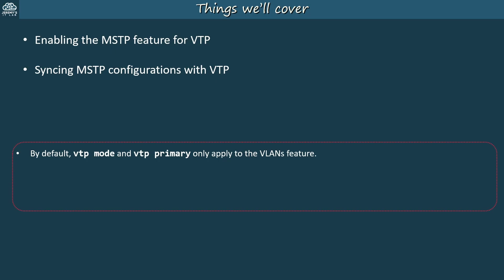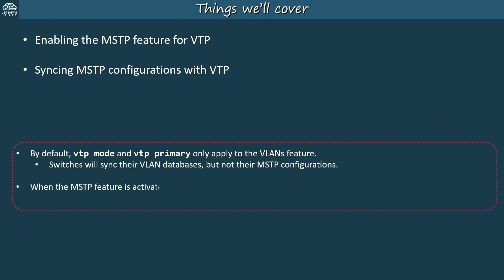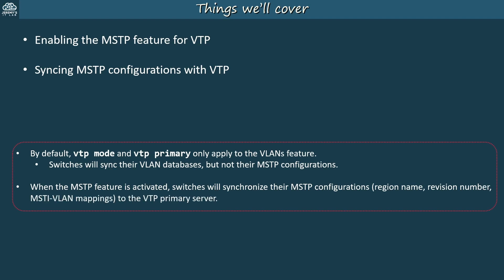By default, when you configure VTP it only enables the VLAN feature, so switches will sync their VLAN databases but not their MSTP configurations. But when the MSTP feature is activated, switches will synchronize their MSTP configurations to the VTP primary server — specifically the region name, revision number, and VLAN mappings.